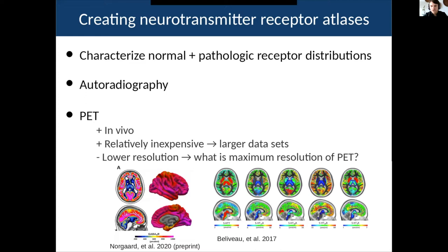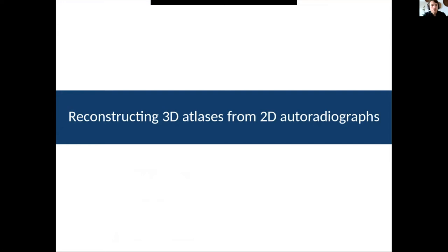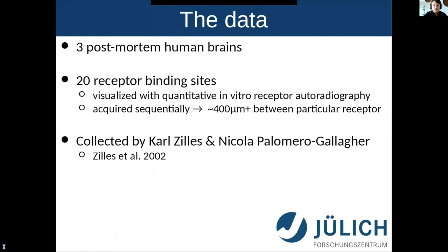PET has the important limitation that we don't really know what the maximum resolution of PET is. But there's been great work out of Gitte Knudsen's lab in Copenhagen — they've already published several serotonin atlases and a GABA-A receptor atlas with PET. I'm first going to do a recap for those not familiar with my work, and then talk about what we're doing now to move forward with the 3D reconstruction of the 2D autoradiographs.